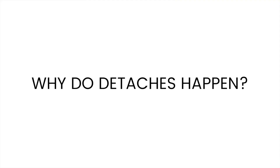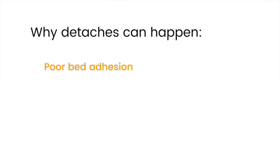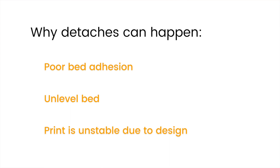So now you know how QuinlyVision detects a detach — but why does a detach happen in the first place? There are a few reasons: the common one being poor bed adhesion, another being an unleveled bed. And sometimes the 3D printed part itself can be unstable — if it's a tall, skinny part that can easily get knocked over, that can detach fairly easily. Or if it's something that's top-heavy, like a tree-shaped object, then that can also get knocked over fairly easily by the nozzle.